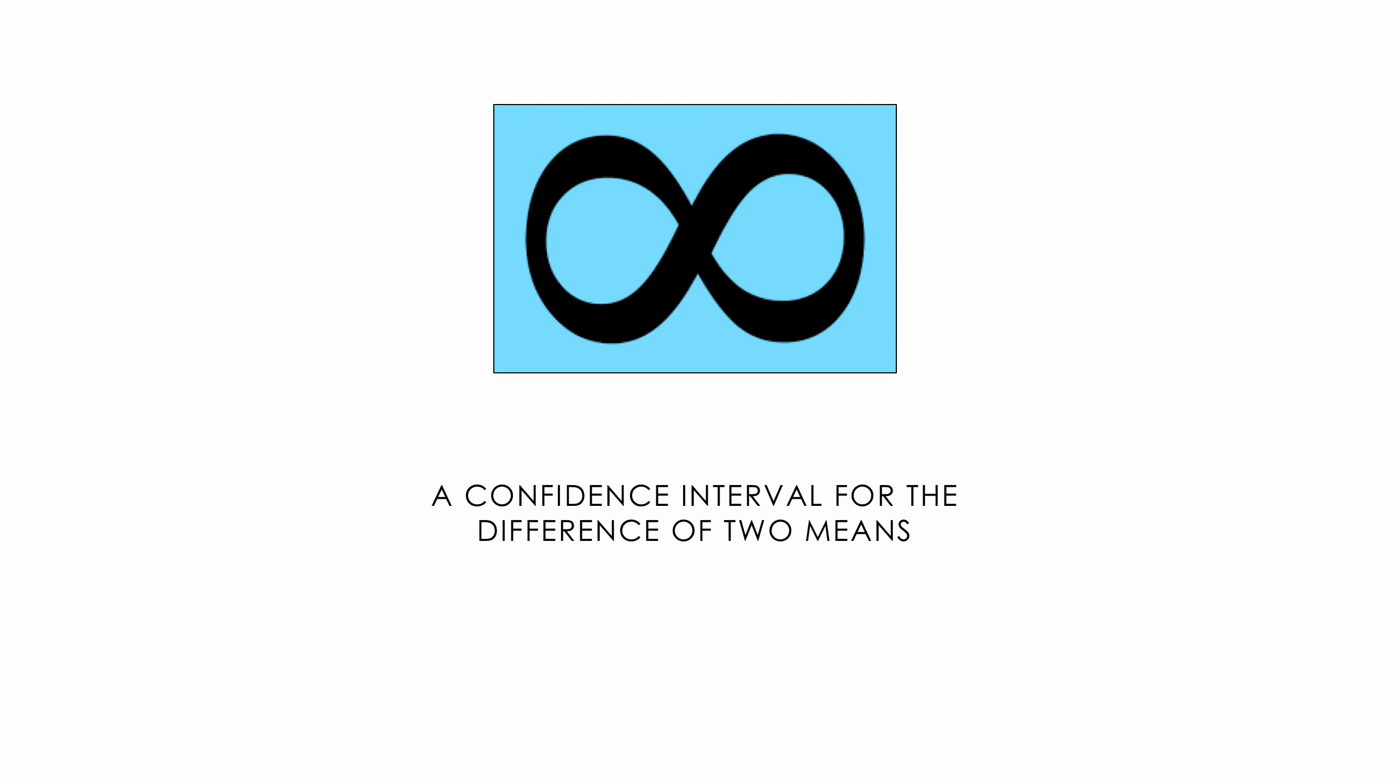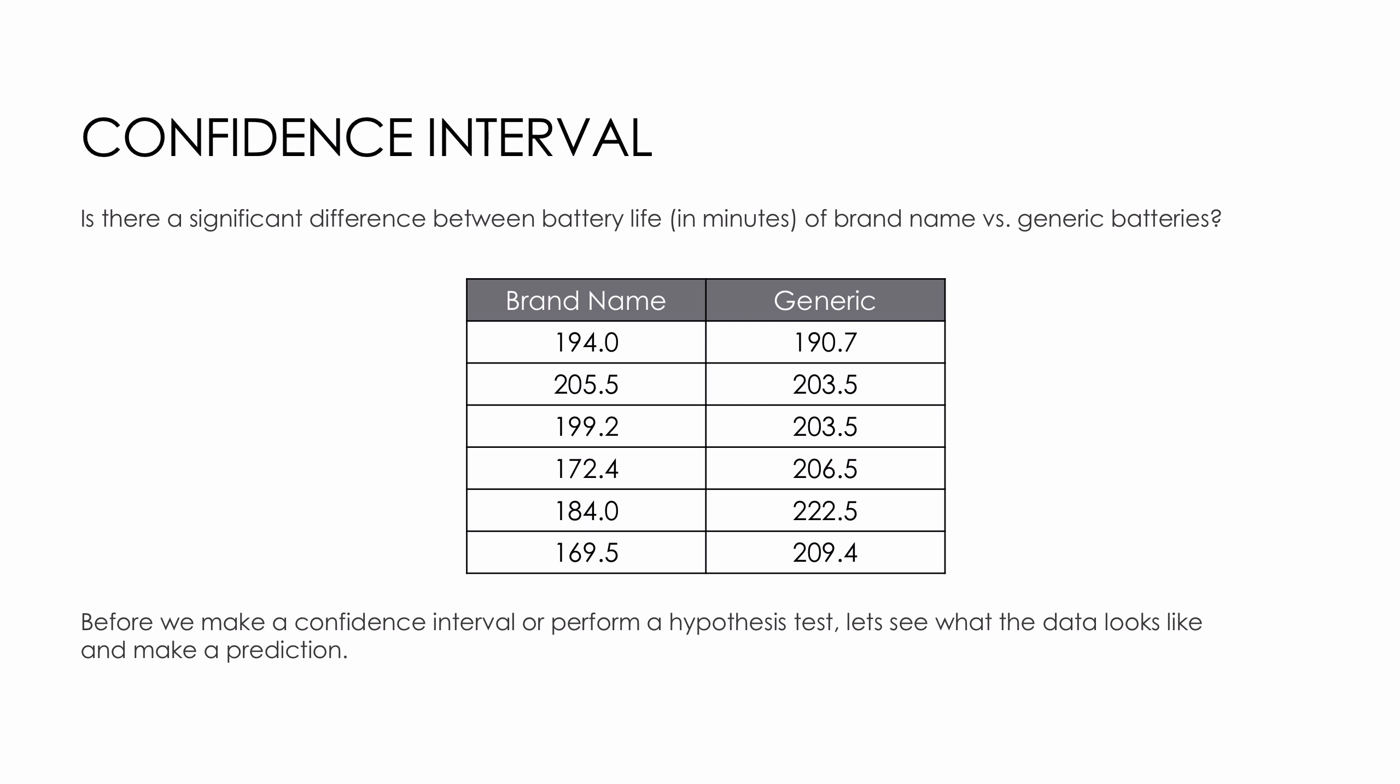In this lesson, we will find a confidence interval for the difference of two means. Our question here is we have some data and we're looking for a significant difference between battery life in minutes of brand name versus generic batteries.